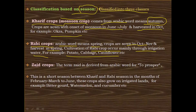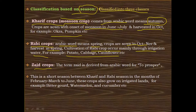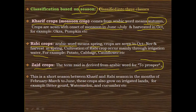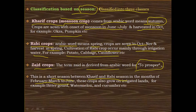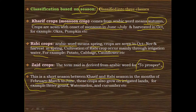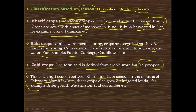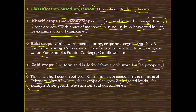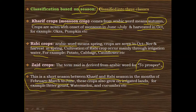The last seasonal class is the Zaid crops. The term Zaid is derived from an Arabic word meaning to prosper. The Zaid season is a short season between the Kharif and Rabi seasons, from February–March to June. These crops are sown in February–March and harvested in June. Zaid crops also grow on irrigated lands and depend on irrigation water. For example, bitter gourd, watermelon, and cucumber.